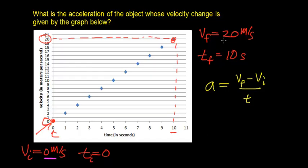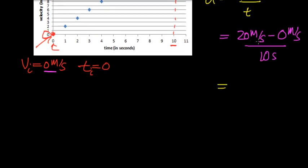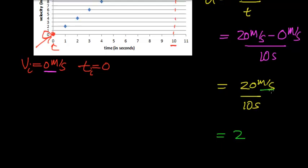My initial velocity is 0 meters per second and my final velocity is 20 meters per second, and it takes 10 minus 0 seconds to change that velocity. Plugging into the equation: 20 meters per second minus 0 meters per second, divided by 10 seconds. Simplifying: 20 divided by 10 equals 2, and my units are meters per second per second, or meters per second squared.